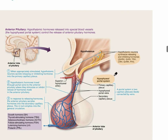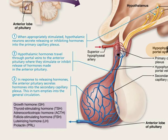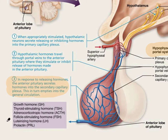When stimulated, the anterior pituitary releases various hormones listed here: growth hormone, thyroid stimulating hormone, adrenocorticotropic hormone, follicle stimulating hormone, luteinizing hormone, and prolactin. These terms are easier to remember if you break them into parts — for example, 'adrenocortico' tells you it affects the cortex of the adrenal gland.